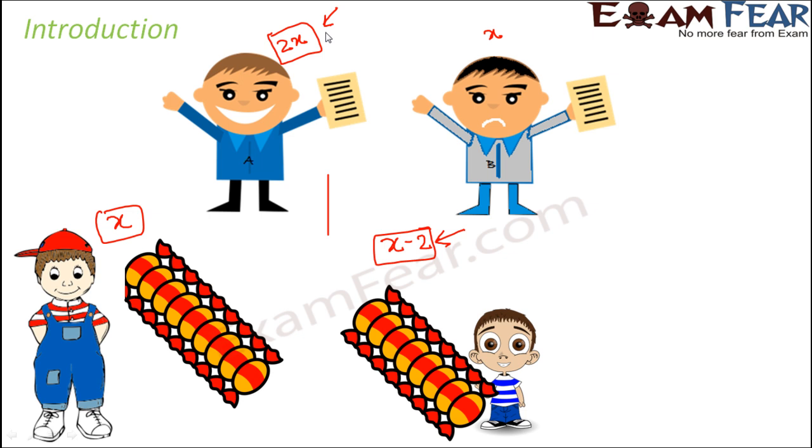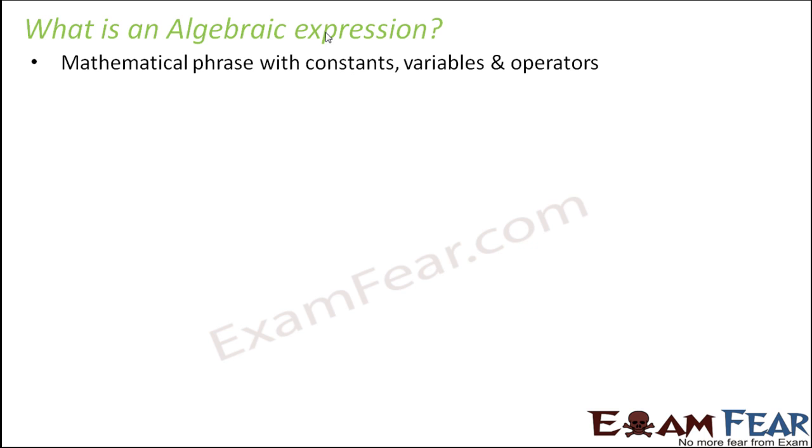Now did you get any idea about what are Algebraic Expressions? Yes, these are those expressions which may have constants like 2, different mathematical operators like plus, minus, division, multiplication, and also variables like X. All of these together make an Algebraic Expression. So what is an Algebraic Expression? A mathematical phrase with constants, variables and operators. Like how we have phrases in English, in Mathematics also we have phrases. We need these expressions which in brief would be able to convey the same information.